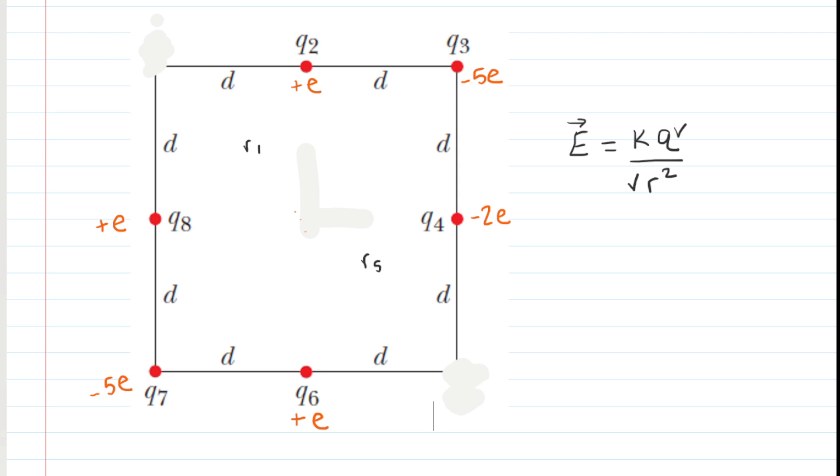Now you can see that a similar story will be told for charges Q3 and Q7. They have the same amount of charge, negative 5e. They are the same distance to the center of this square. Their directions would be in opposition to one another. Again, imagine putting a positive test charge at the center. That positive test charge would be attracted towards Q7, but it would also be attracted towards Q3.